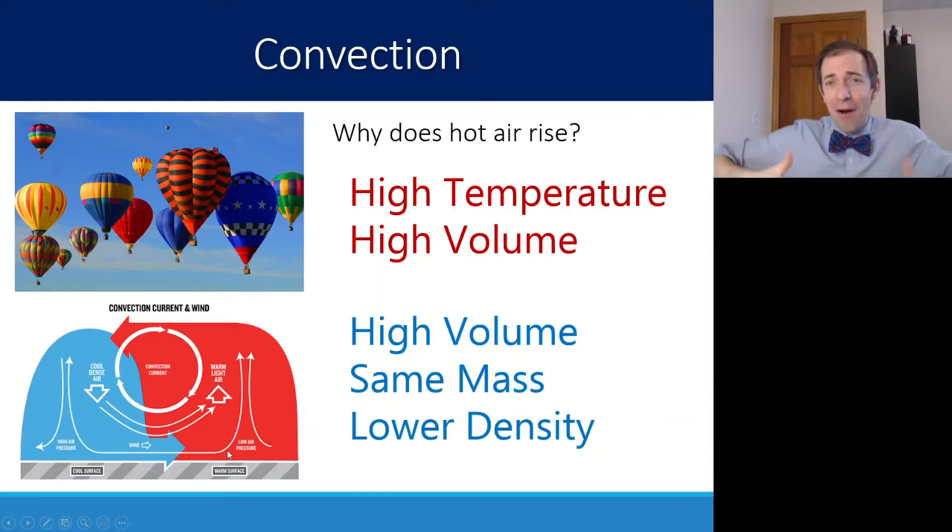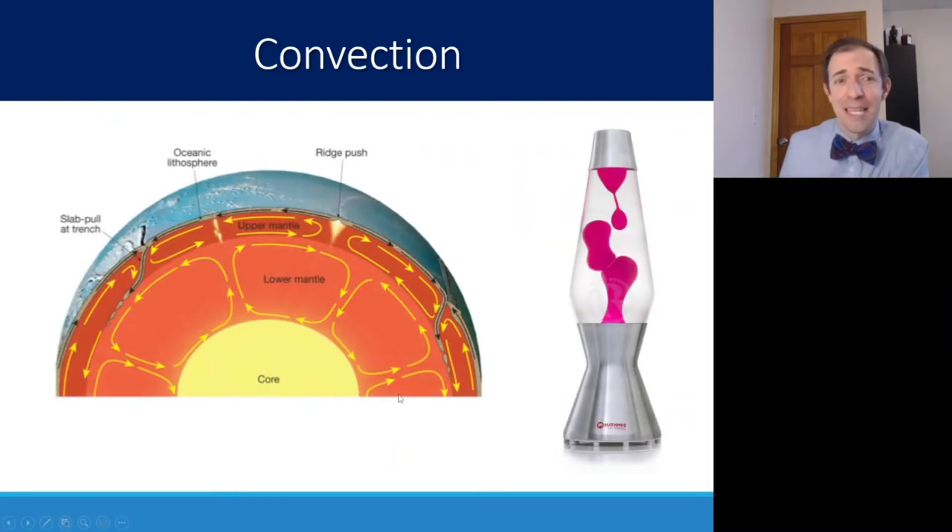We call it a convection current. So hot goes up, cold swoops in to fill its space, and you see kind of this mixing of the air. So the heat is being transferred from low to high, but there's also heat being transferred just from the mixing in general. And we see this in some other examples as well, that the mantle inside our earth below the crust has convection currents that are happening. So as the lower mantle gets closer to the core, where it's hotter, that mantle heats up, it increases its volume with the same amount of mass, and then floats on the other part of the mantle and rises to the surface where it can cool down and then make the cycle back again. Now we can't really see this happening, but one way that we can see this sort of motion a little bit easier is something called a lava lamp. That's a really nice visual of this convection current that is changing.